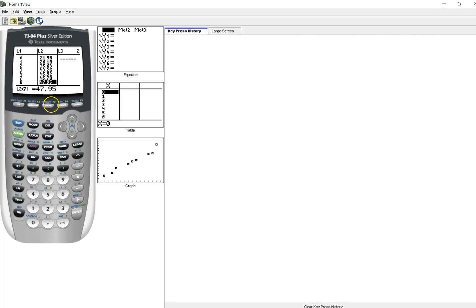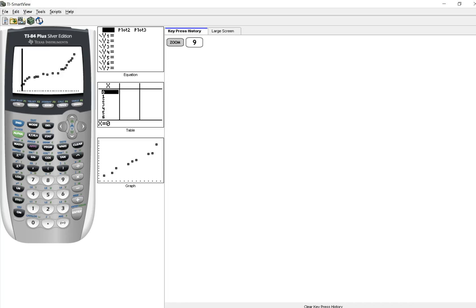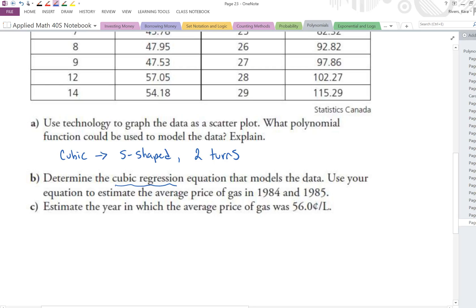Now that you have all the data in here, zoom 9, and you can see here the curve. You can see that it's hopefully you can see that it's a cubic function. It's S shaped and it has two turns in there. Let's find the cubic regression equation. Before we do that just put in your notes here it says use technology what polynomial function could it be and we're saying it's cubic because it is S shaped and has two turns. Let's get the equation so we're going to go back into our stat menu calc and now you're finding cubic regression which is six.